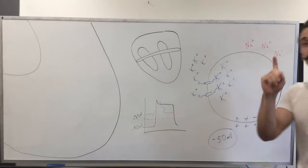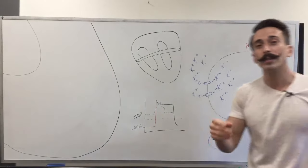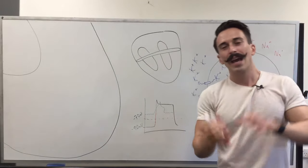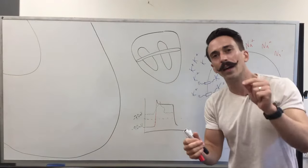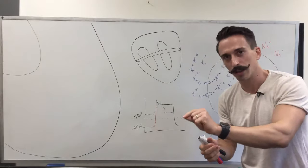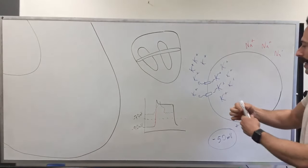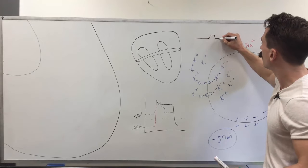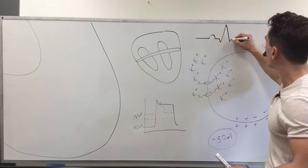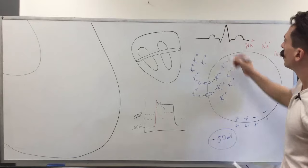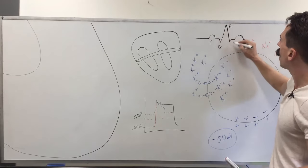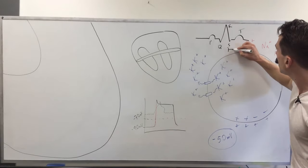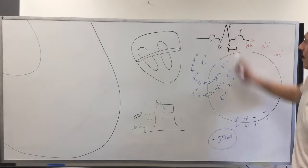Keep that in mind because now we need to talk about what happens in ST elevation and ST depression. A STEMI — ST elevated myocardial infarction — is where on an ECG trace, which has the P wave, QRS complex, and T wave, the ST segment is elevated.